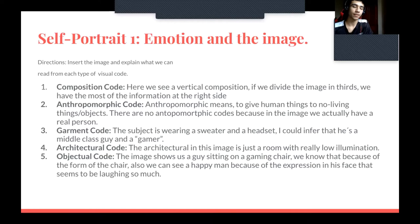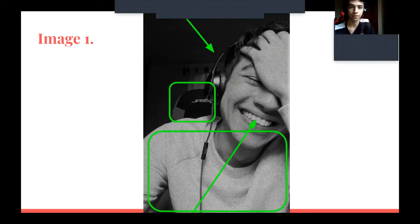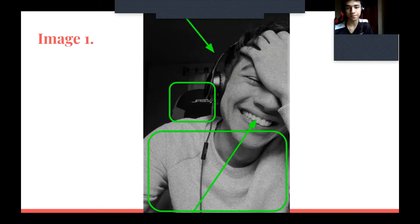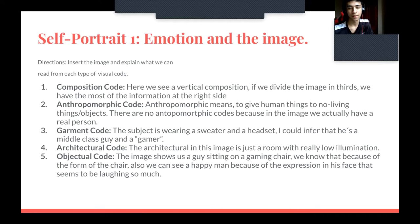The fourth code is the architecture code. In this image we just have a room with really low illumination that doesn't bring us much information. The fifth is the objectual code — this image shows a guy sitting on a chair, and we know that because of the form of the chair. Also, we can see a happy man because of the expression on his face — he looks like he's loving something.